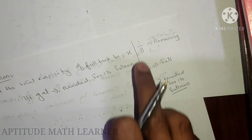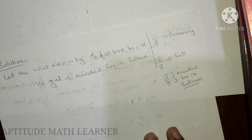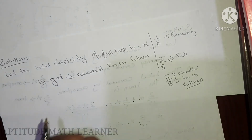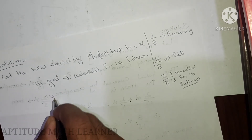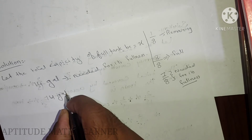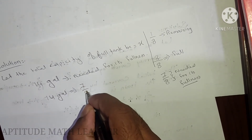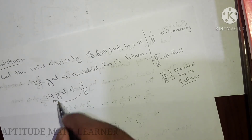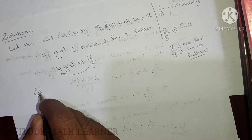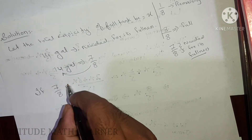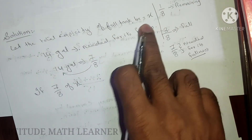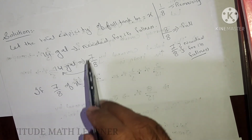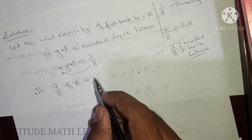We already have one eighth, and the remaining seven eighths is needed. So 14 gallons are needed for its fullness, which means seven eighths of x equals 14 gallons. That is, seven eighths of the total tank capacity is 14 gallons.